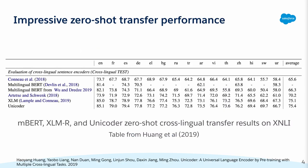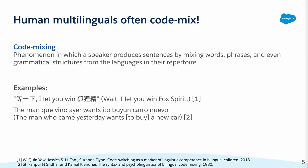This approach has yielded impressive performance. However, this setting only tests performance on individually monolingual examples, meaning each example is constructed with words from the same language. However, such a setting does not test a model's ability to handle code mixing, which is something common in bilingual or multilingual societies. Code mixing is the phenomenon in which a speaker produces sentences by mixing words, phrases, and even grammatical structures from the languages in their repertoire. Human multilinguals often acquire this ability without being explicitly taught, and it is reasonable to expect NLP systems that interact with them to be able to handle code mixing.